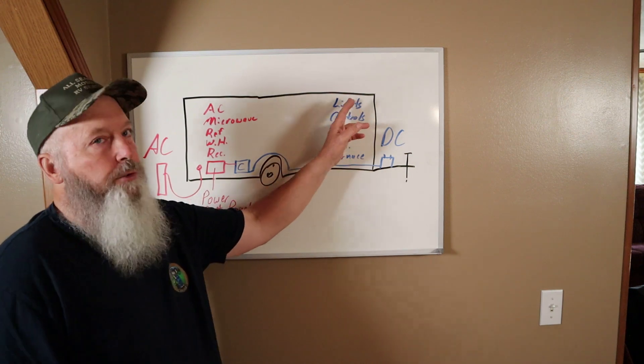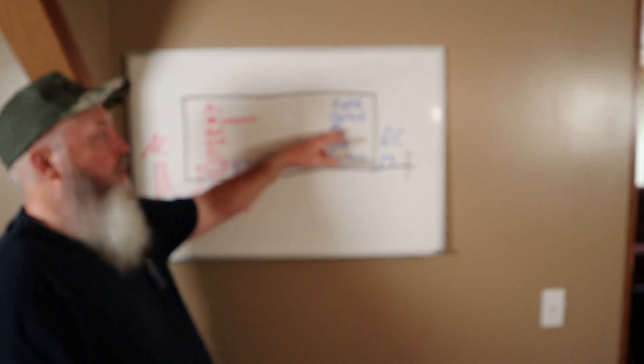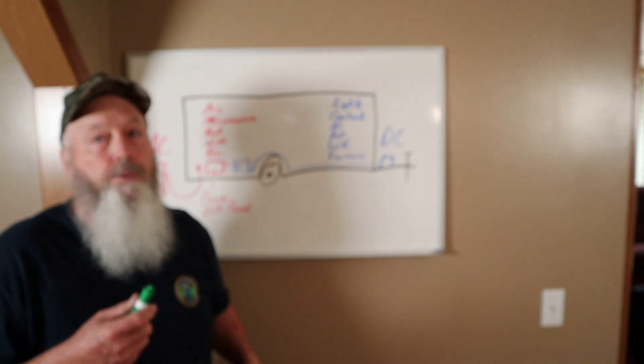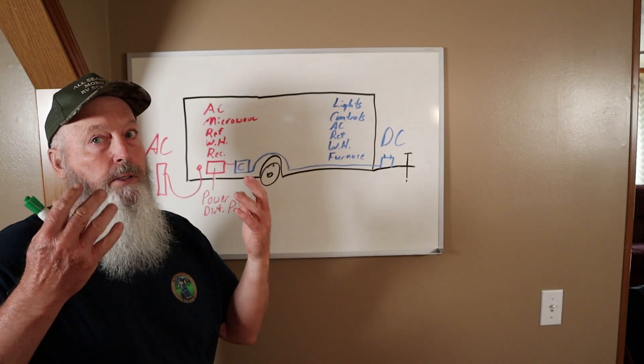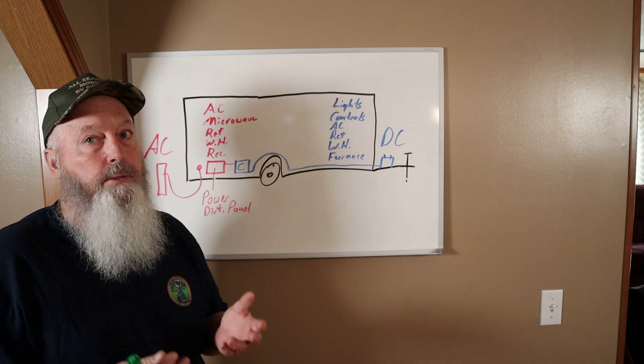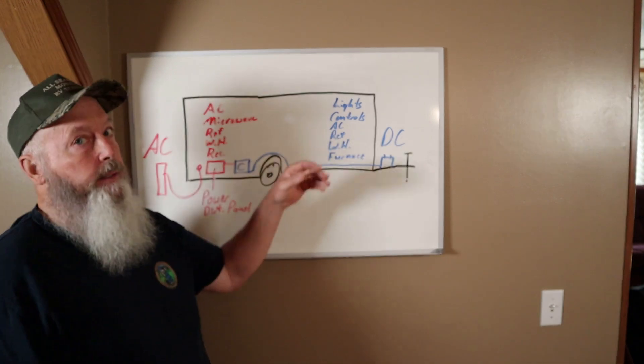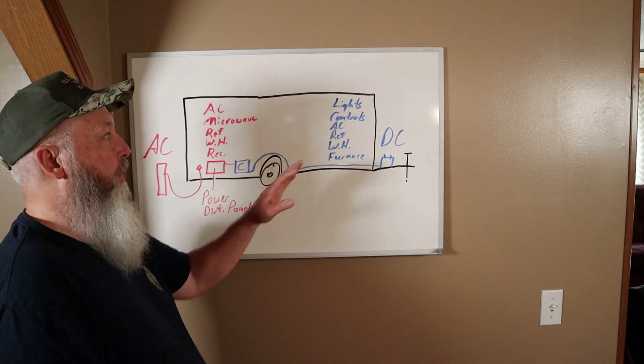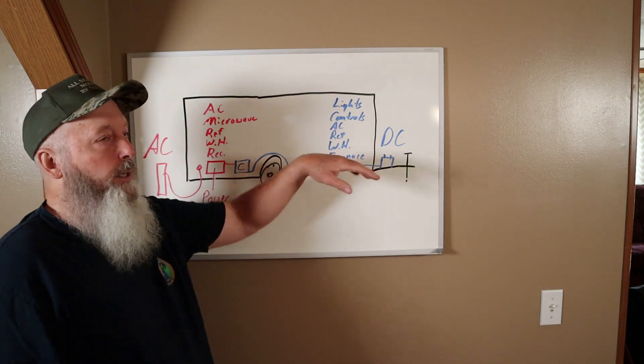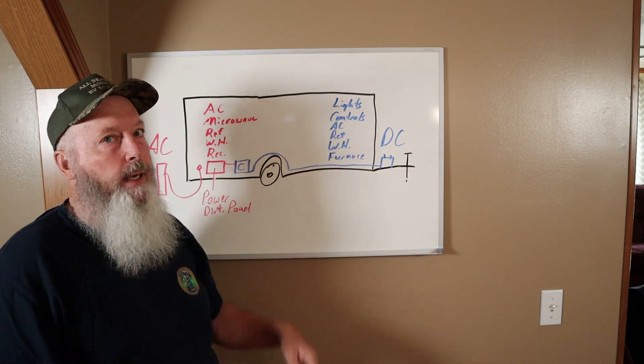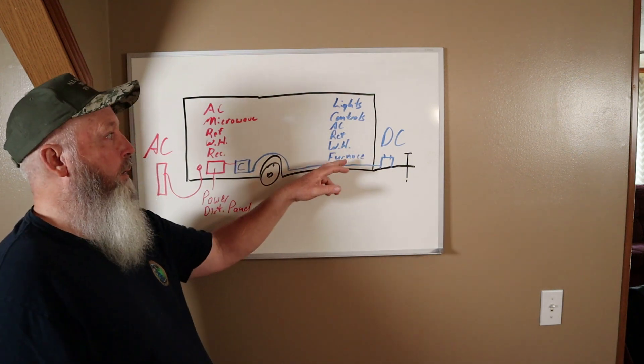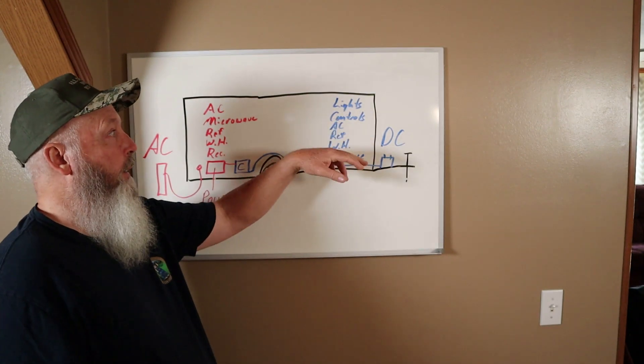You'll be able to use your lights. You are going to be able to use your refrigerator as long as it runs on propane - all it needs is a good DC power source to run the controls, propane to heat up the flue where it needs to heat up, and it'll work. Your water heater will also run on gas, so all it needs is DC and propane. Your furnace will work.